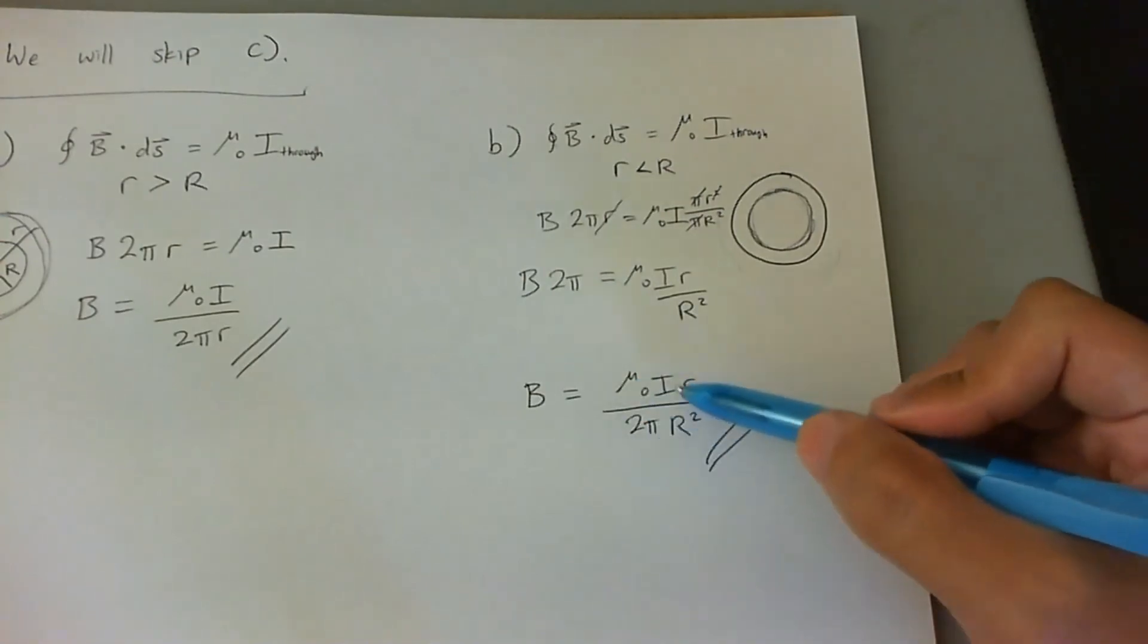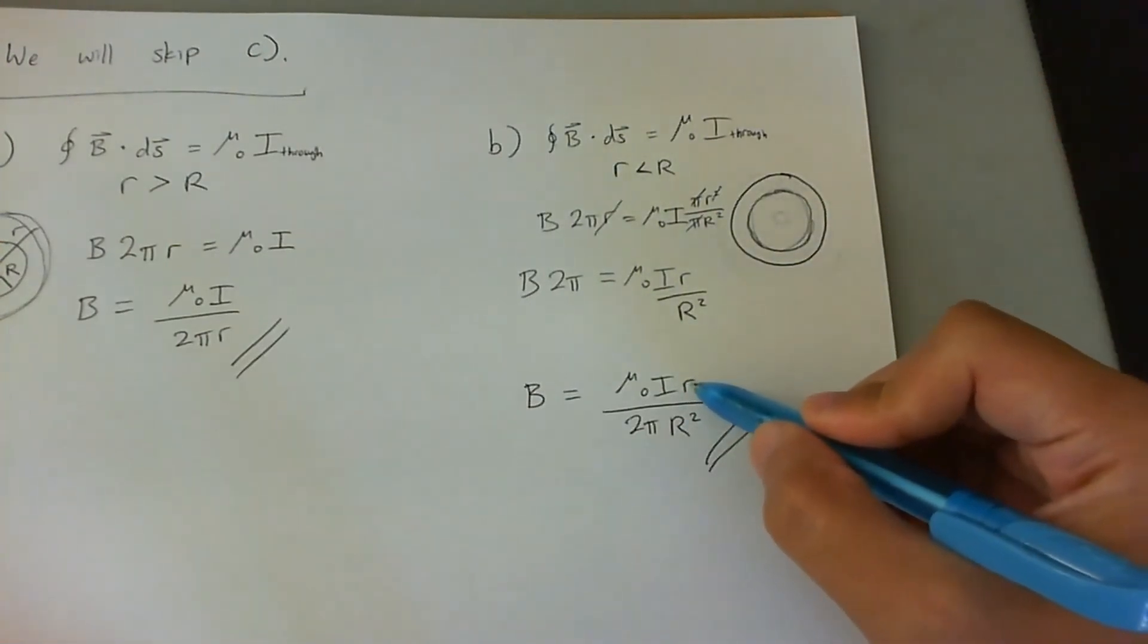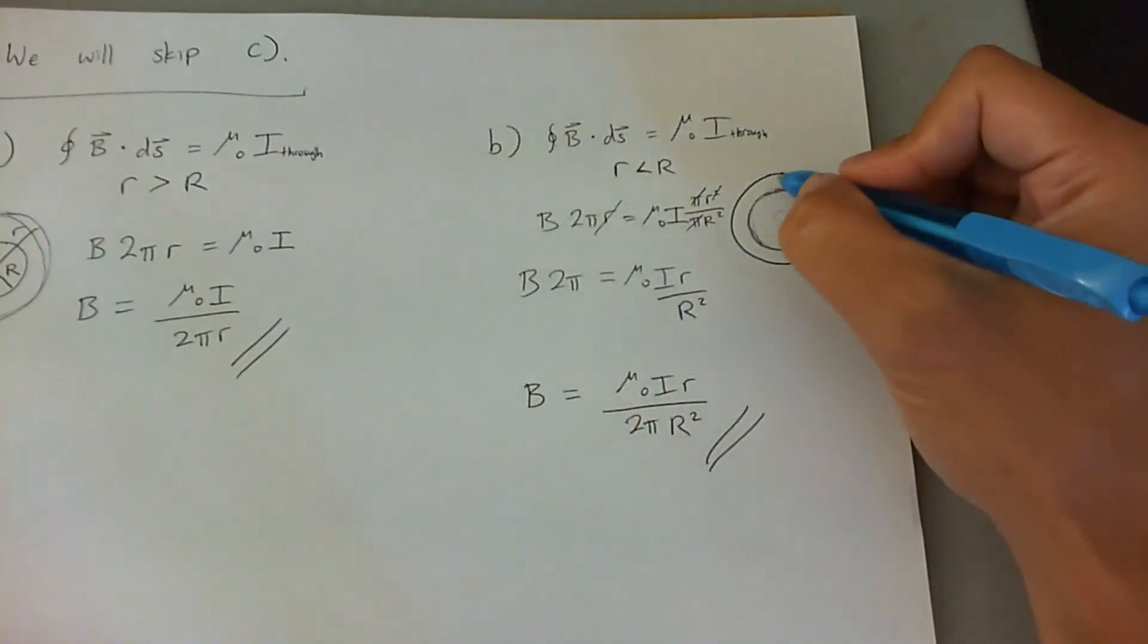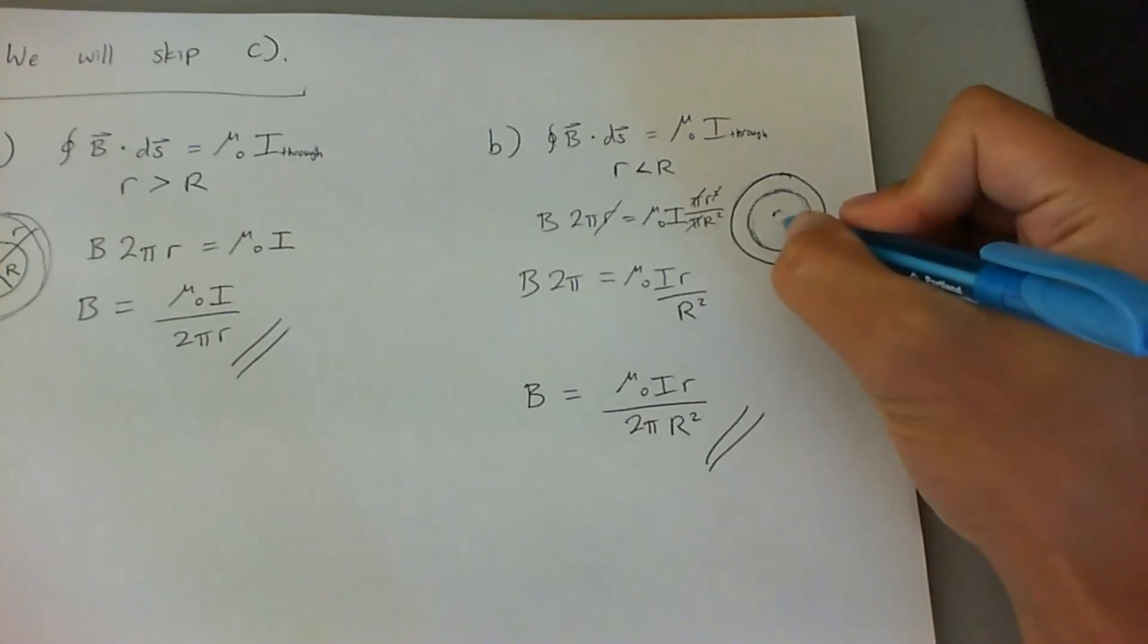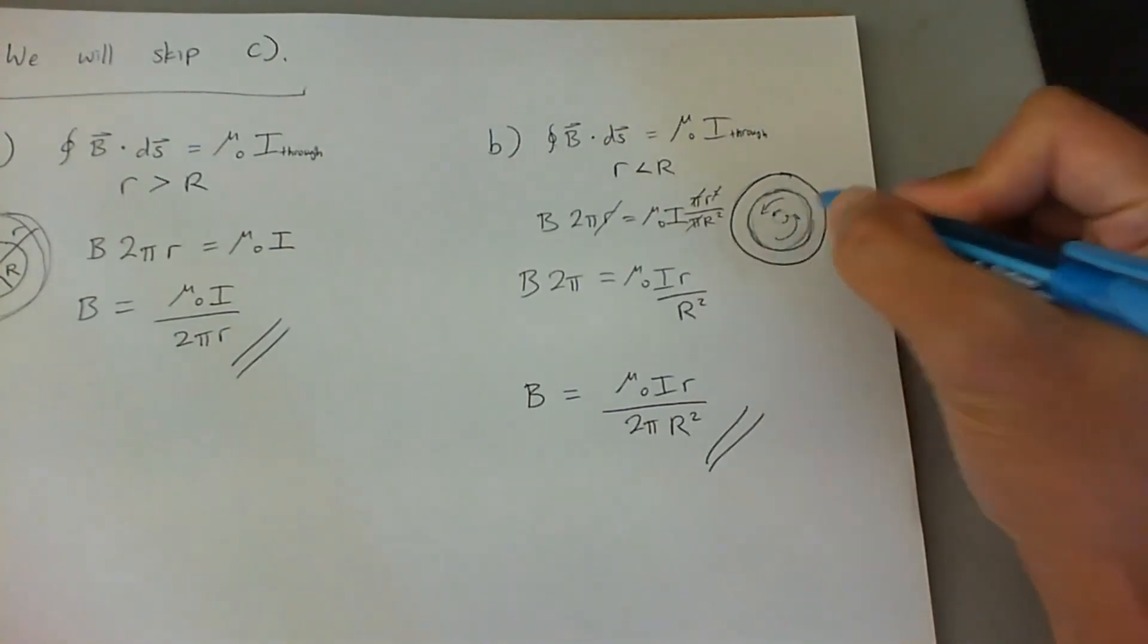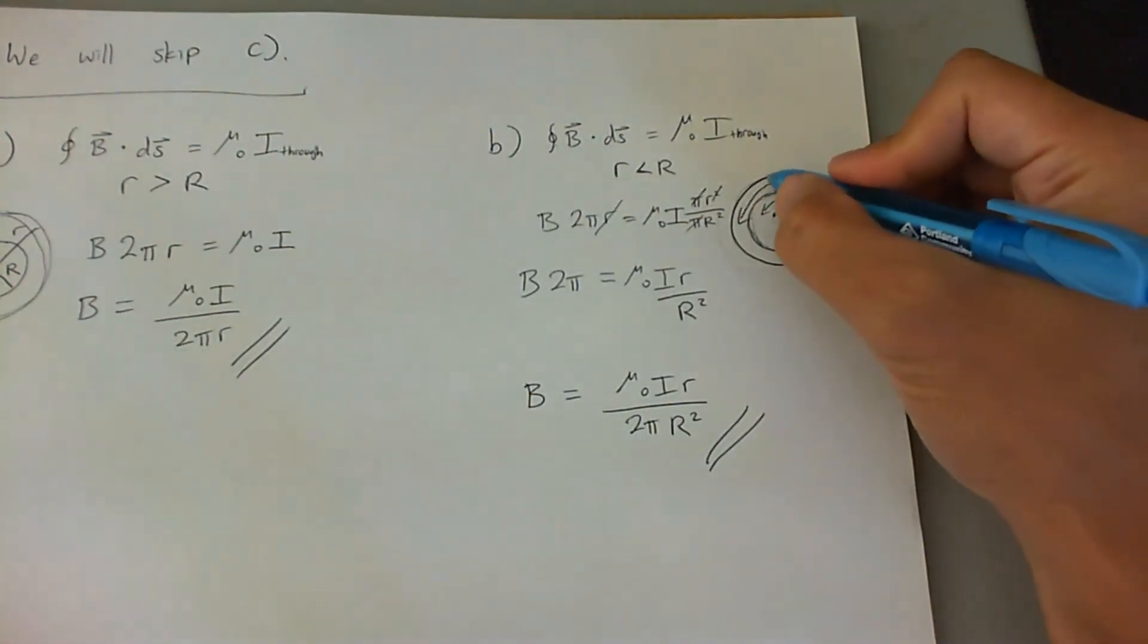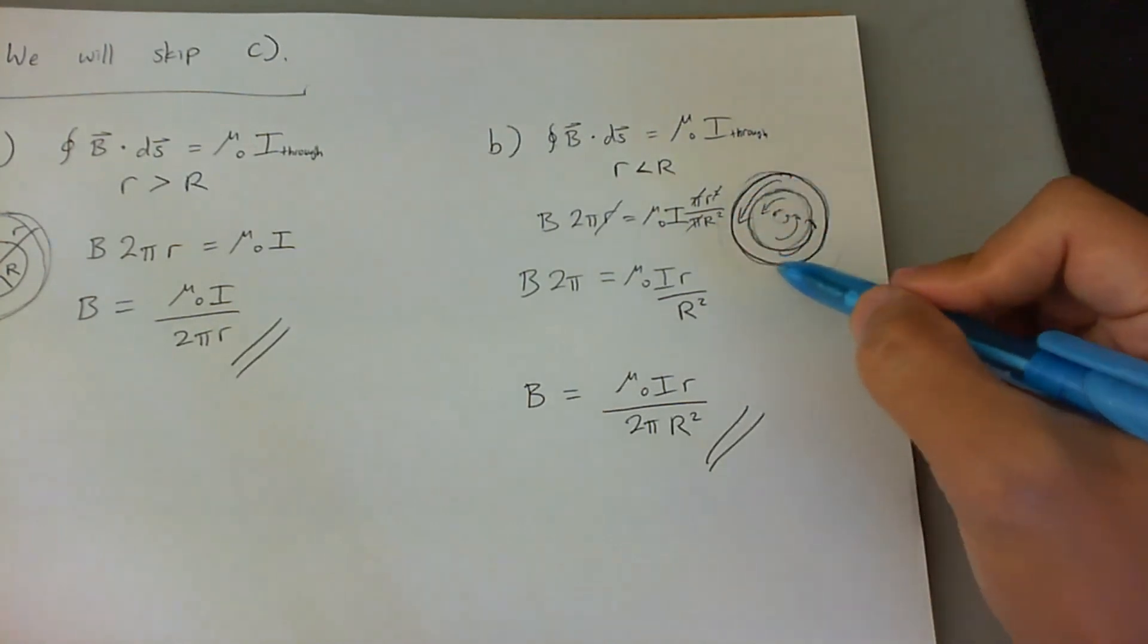So everything is constant except this r. So as this Amperian loop gets bigger, you're going to have a larger numerator, which means the B field gets larger. So that means within this cylindrical wire, cross-section area wire where current goes through it, the B field is going to be very small here, but then it will get bigger as you come out a little bit, and get bigger as you come out a little bit, and will be the biggest right here at that edge of that wire.